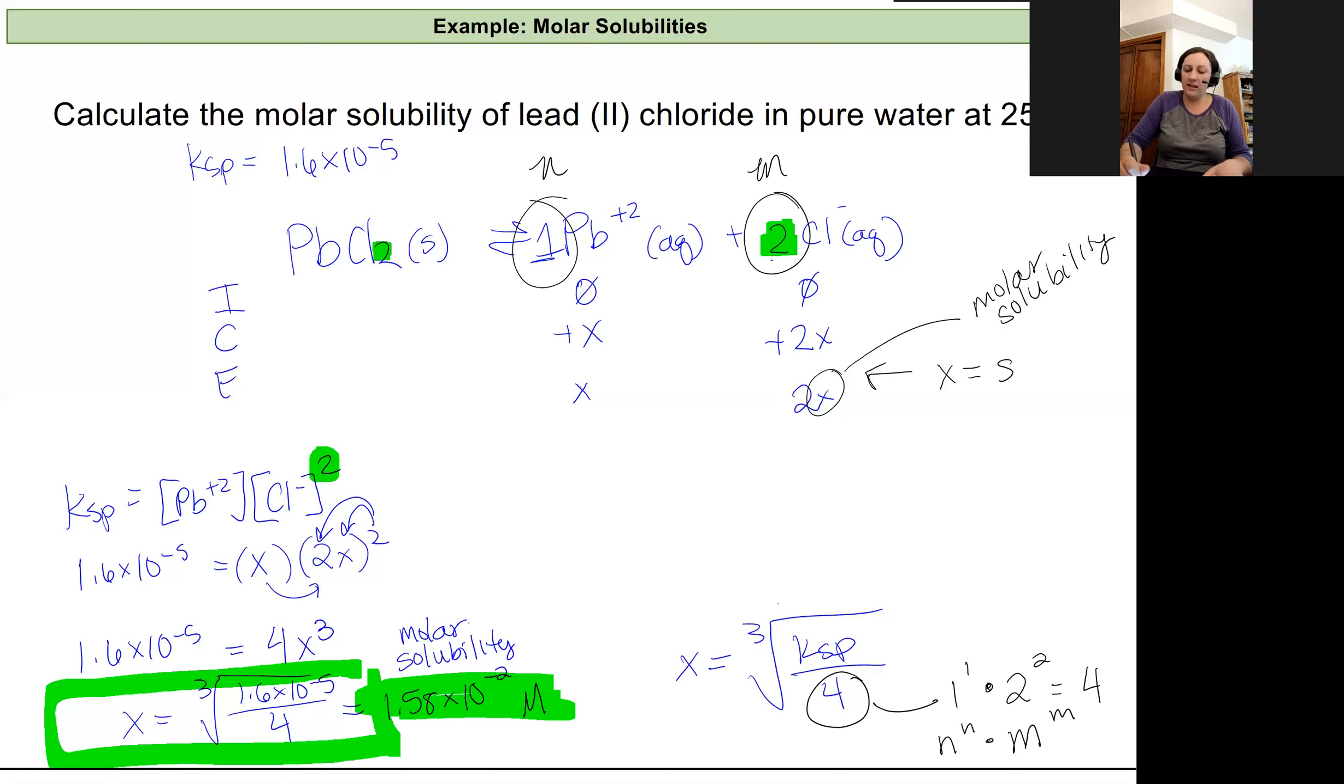This 3 right here was our 1 plus 2. That's our n plus m. Again, that n plus m are our coefficients. So we use those coefficient values multiple times when we're actually, once we have this all rearranged to solve for molar solubility.